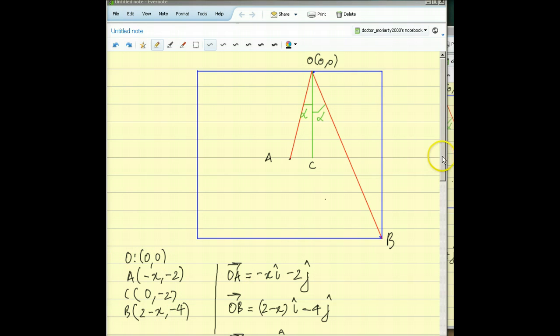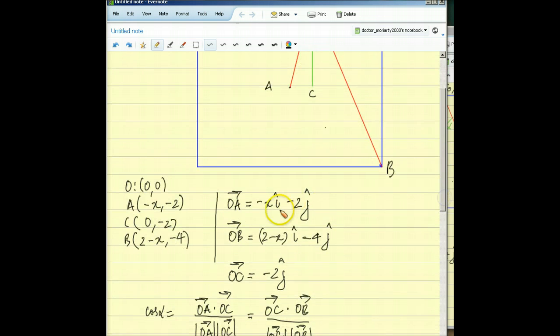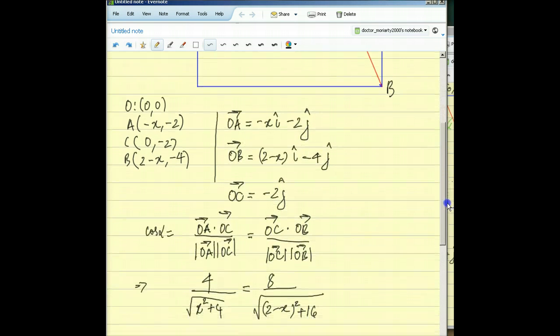Now you have the coordinates of these four points and you can figure out the three vectors OA, OC, and OB. These are the position vectors: OA is -X î - 2ĵ, OB is (2-X)î - 4ĵ, OC is -2ĵ. That should be fairly simple.